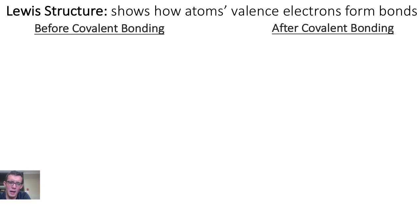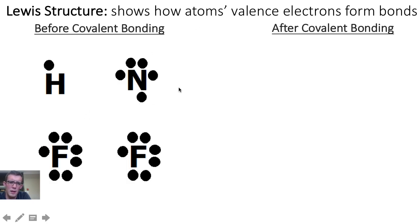Hi chem team. In order to predict how elements will bond together, chemists will create things called Lewis structures. So for instance, if chemists wanted to predict how nitrogen, hydrogen, and two fluorine atoms would bond together, they'd first look at the valence shells of each atom to determine their stability.